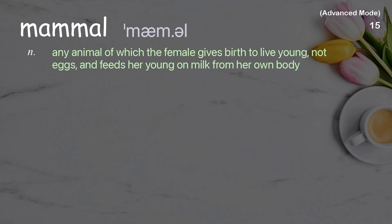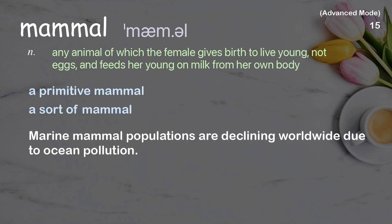Mammal: any animal of which the female gives birth to live young, not eggs, and feeds her young on milk from her own body. Examples: a primitive mammal, a sort of mammal. Marine mammal populations are declining worldwide due to ocean pollution.